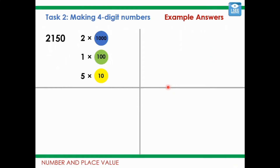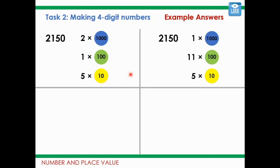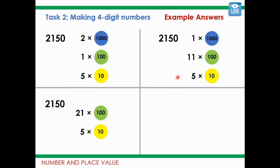Let's look at some different possible ways of making 2150. The standard way: two thousands, one hundred, and five tens. Another way: one thousand, then eleven hundreds — that's one thousand plus ten extra hundreds — and still five tens. Or, don't use any thousand coins at all: make 2100 using 21 lots of 100, and then five ten coins. Or just use tens: you would need 215 ten coins.